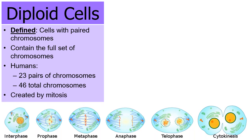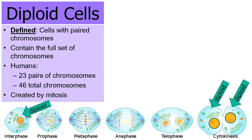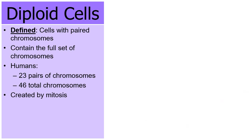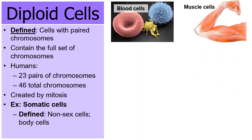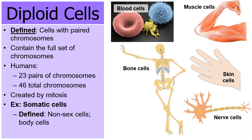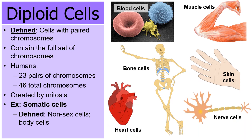Diploid cells are created through the process of mitosis. When a cell begins mitosis it is already diploid, and by the end it remains diploid. Mitosis maintains the same amount of genetic material from start to finish — very different from meiosis, which we'll discuss briefly. Examples of diploid cells are somatic cells — the non-sex cells of the body not involved in reproduction. These include blood cells, muscle cells, bone cells, skin cells, nerve cells, and heart cells. The vast majority of the body consists of diploid somatic cells.